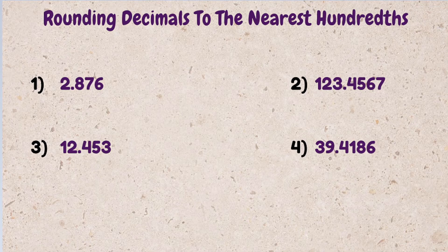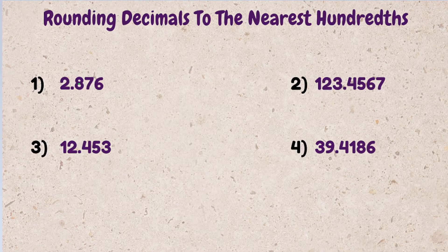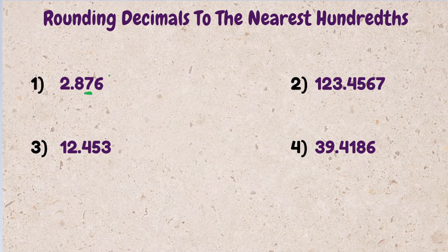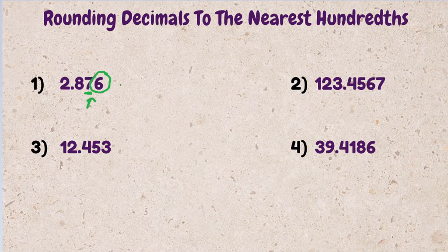Example one, 2.876. First thing we want to do is figure out what number is in the hundredth spot. Eight is in the tenth spot. Seven is in the hundredth spot. We look at the number to the right, which is six. The rule is, if it's five or greater, we round up. So 2.876 will round to 2.88.